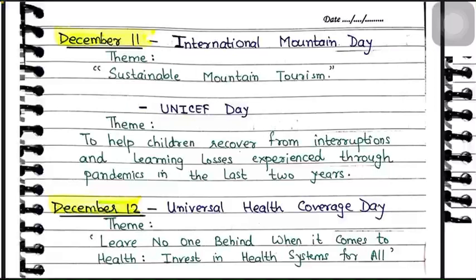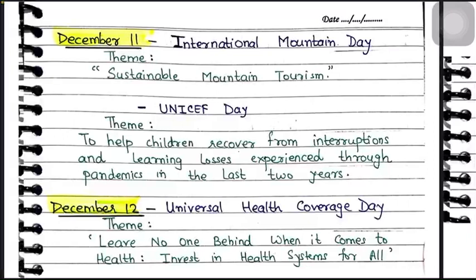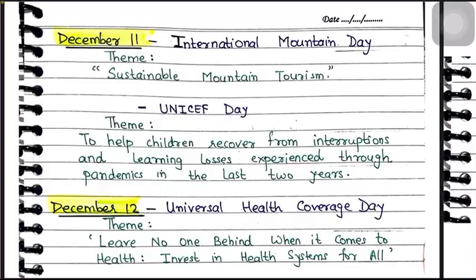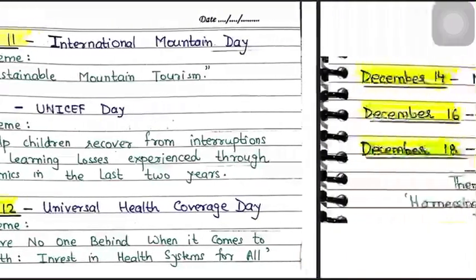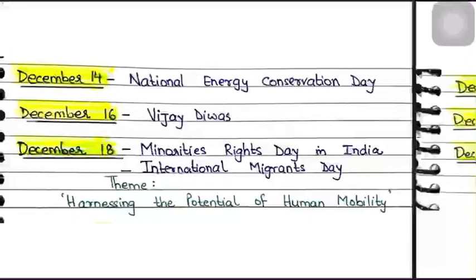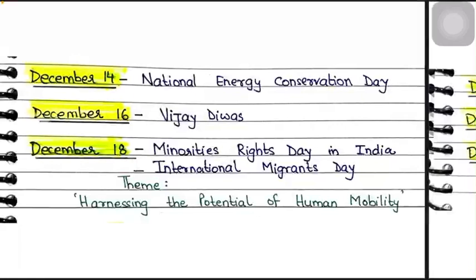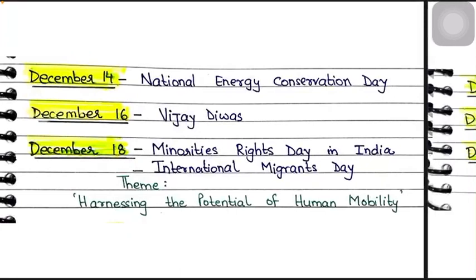December 12 is Universal Health Coverage Day, done to spread awareness about the need for strong and resilient health systems with universal health coverage. The theme was 'Leave No One Behind: Invest in Health Systems for All.' December 14 is National Energy Conservation Day, celebrated every year by the Bureau of Energy Efficiency (BEE). In 2021, it was observed from December 8 to 14 under the 'Azadi Ka Amrit Mahotsav' initiative to make people aware of global warming.